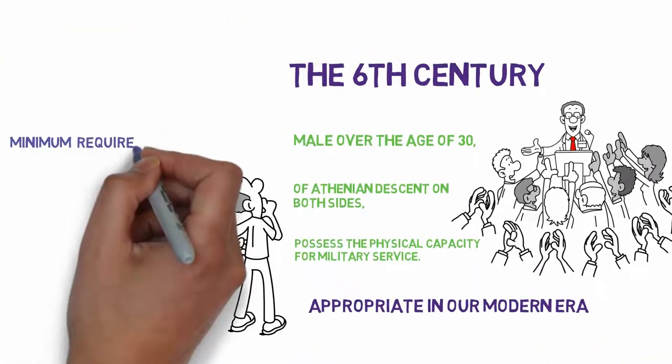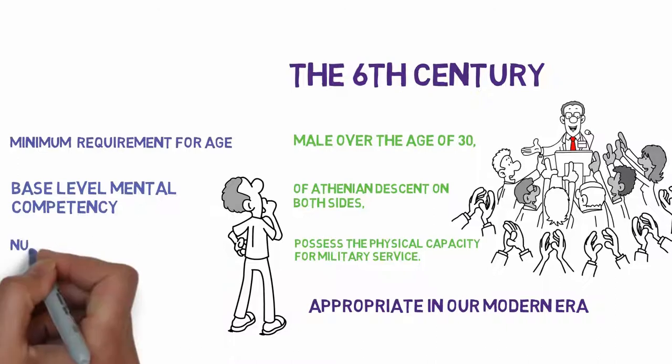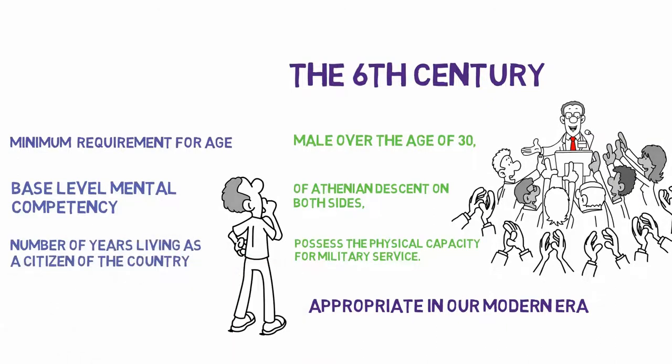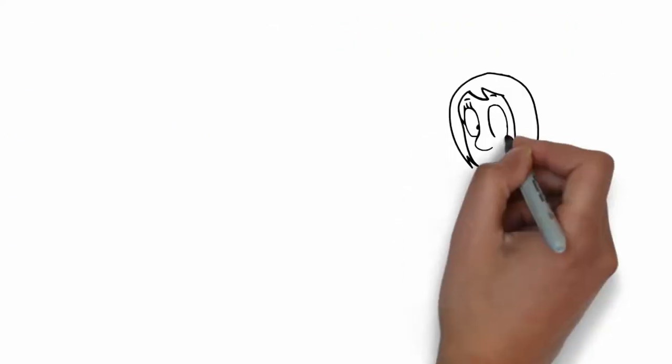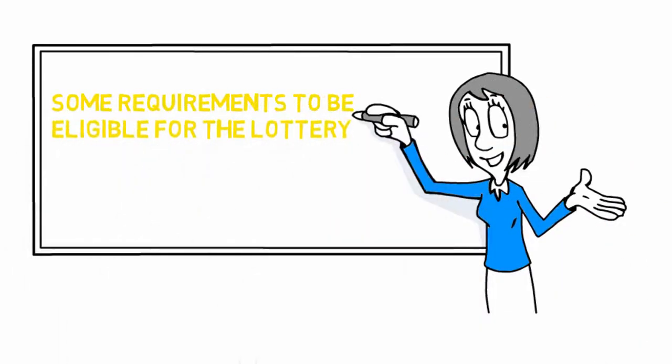And it would make sense to have a minimum requirement for age and base-level mental competency, as well as a certain number of years living as a citizen of the country for which you're going to serve. The point here is there would be some requirements to be eligible for the lottery.